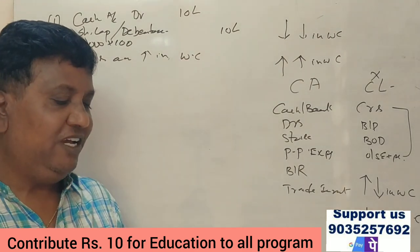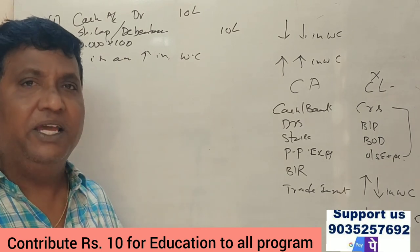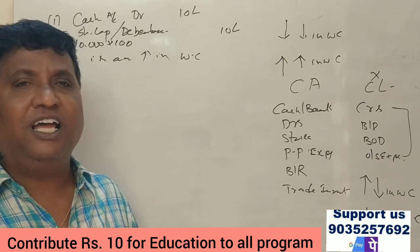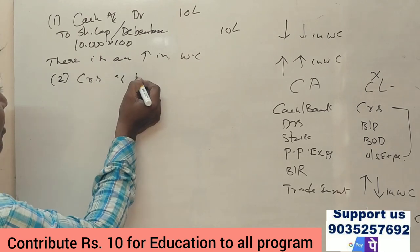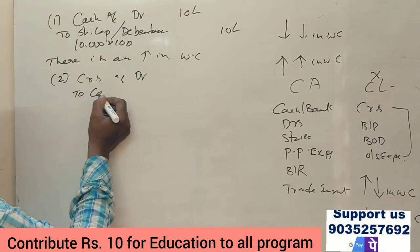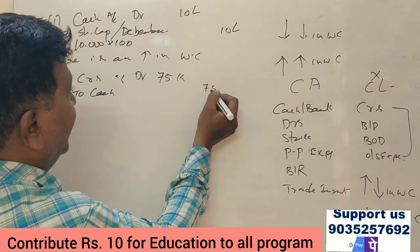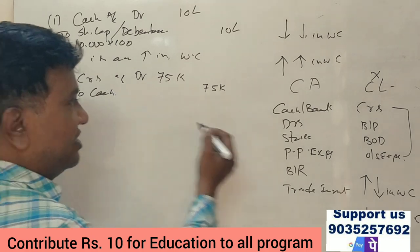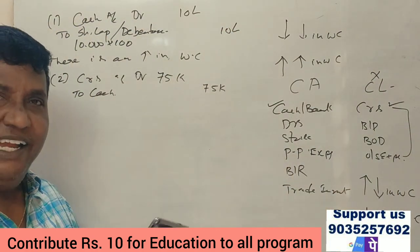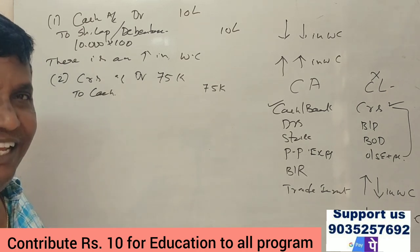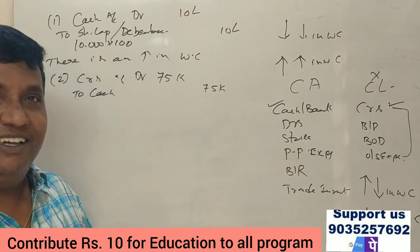Second question: Cash paid to creditors ₹75,000. Journal entry: Creditors account debit to cash account. Creditors are a current liability; cash is a current asset. Both decrease by the same amount, so there is no change in working capital.